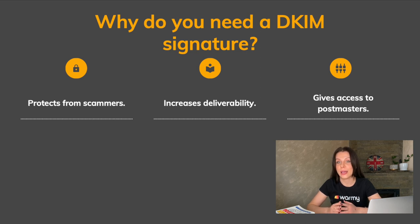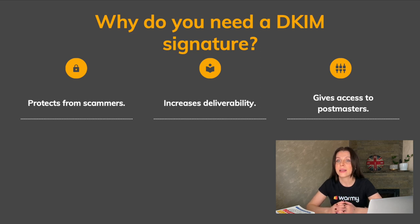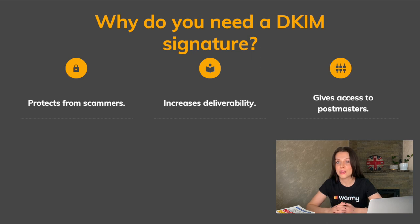Why do you need a DKIM signature? It protects from scammers — a DKIM signature will prevent spammers from sending emails on your behalf. Together with SPF and DMARC, this technology will protect your subscribers from fraudsters, including identity theft. DKIM also increases deliverability by improving domain reputation. The receiving server determines the authenticity of the sender and its overall rating, and emails with a good reputation are more likely to end up in the inbox. DKIM works like an ID — you present it to the mail provider and it lets you into the inbox. It also gives access to postmasters, which are mail services for mailing analytics that help track deliverability, opens, unsubscribes, and spam complaints.